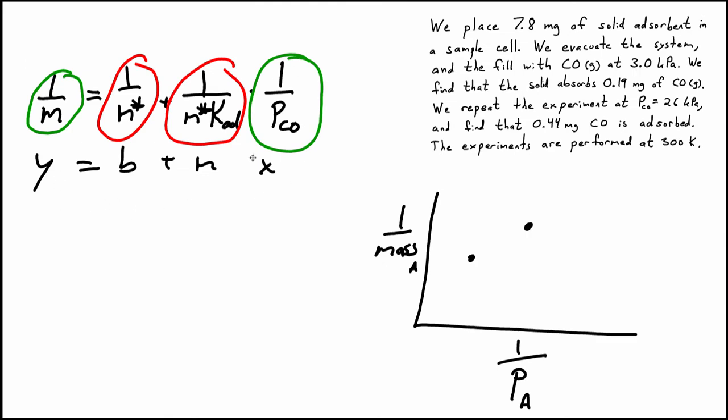So what we have to do is plot the reciprocal of the pressure of gas. And then as a function of that, we're going to plot the reciprocal of the mass of gas that was absorbed. Normally we'd have a whole series of points, but in this case, we just have two. So let's look at that data.